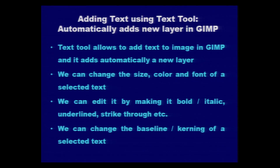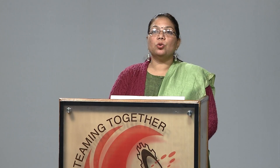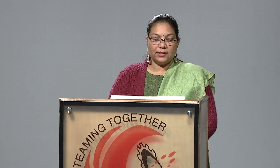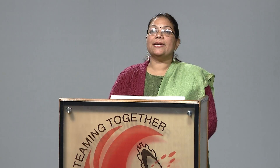The user needs to select the required text they want to edit, and then several properties can be changed: the size, color, and font of the selected text. We can also edit it by making it bold, italic, underlined, strikethrough, and so on. The text tool has all this functionality, and further we can change the baseline or kerning of a selected text.